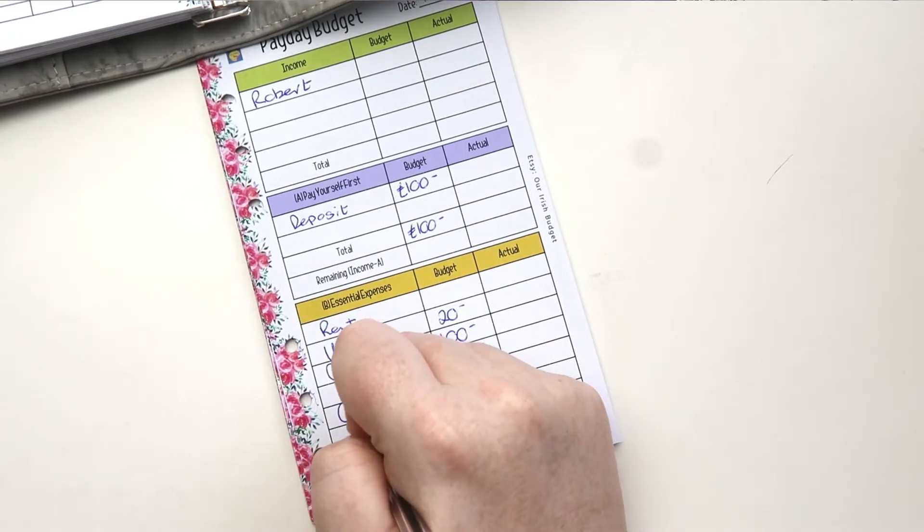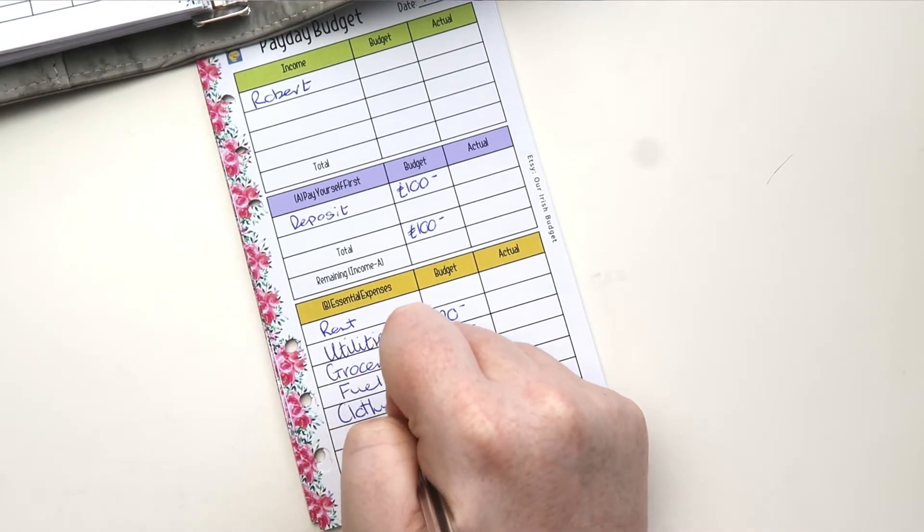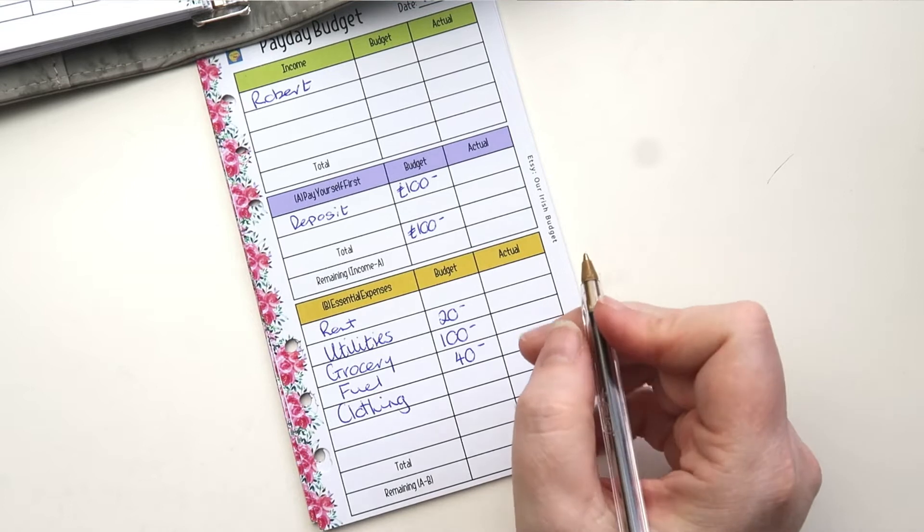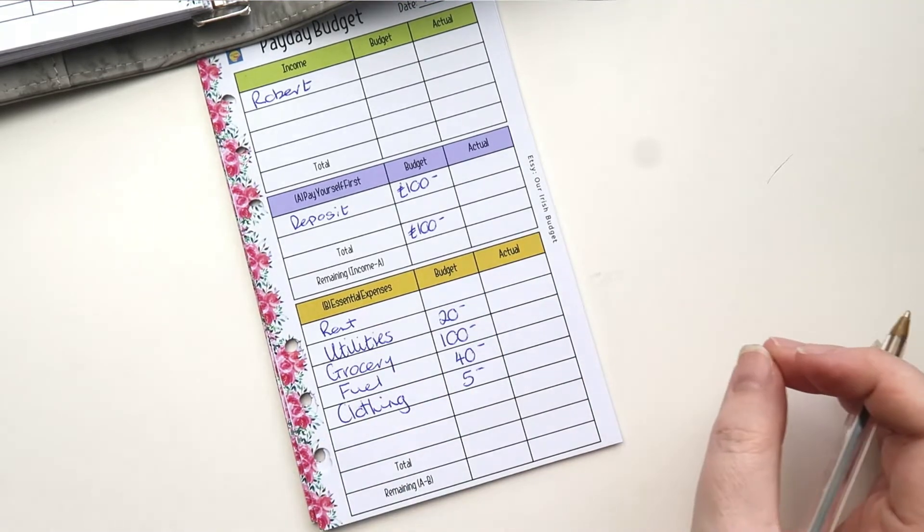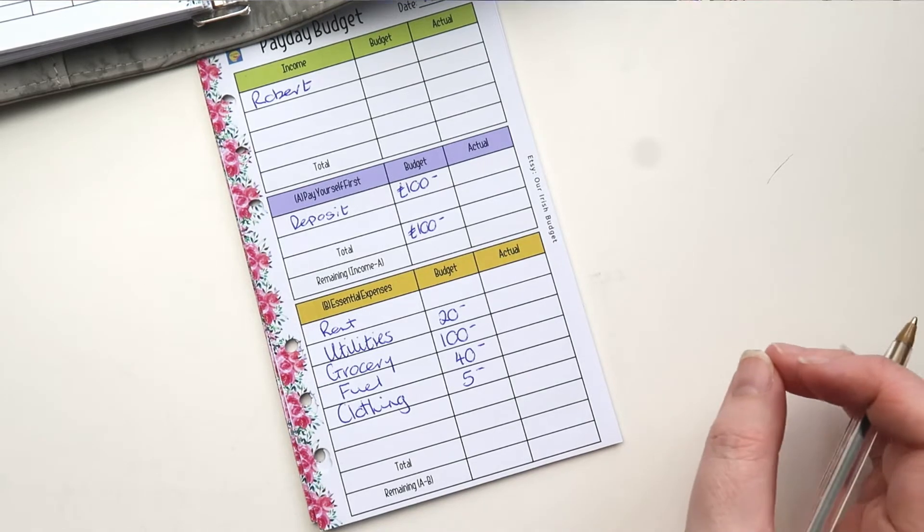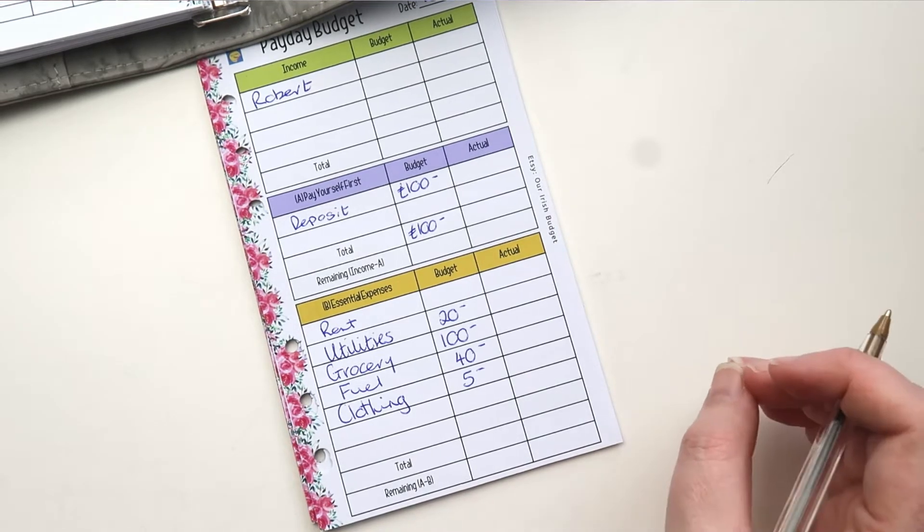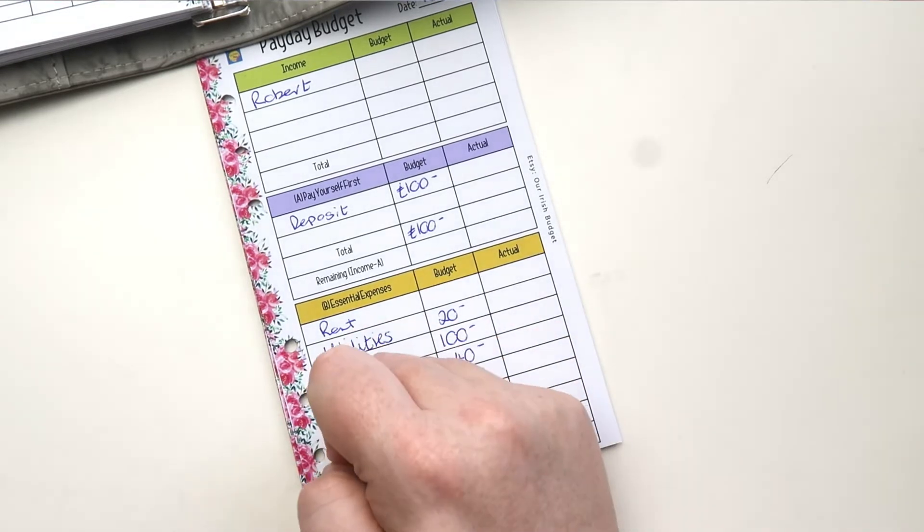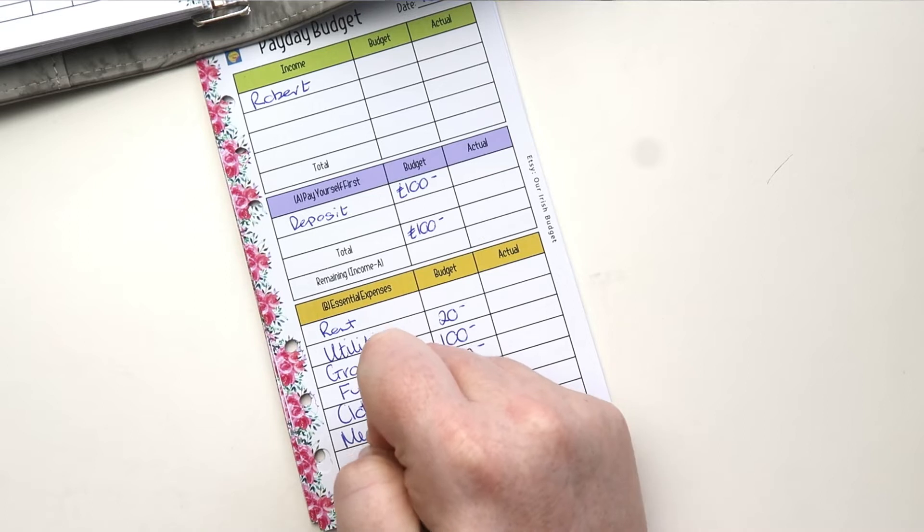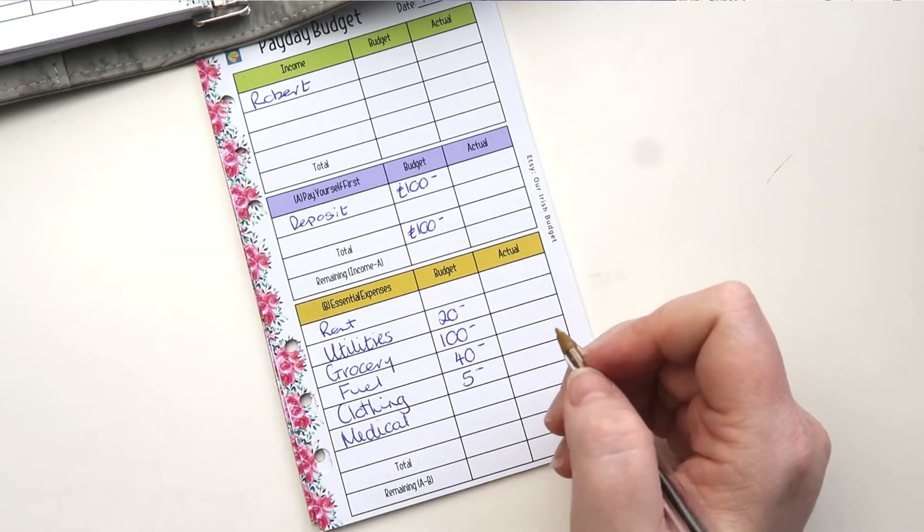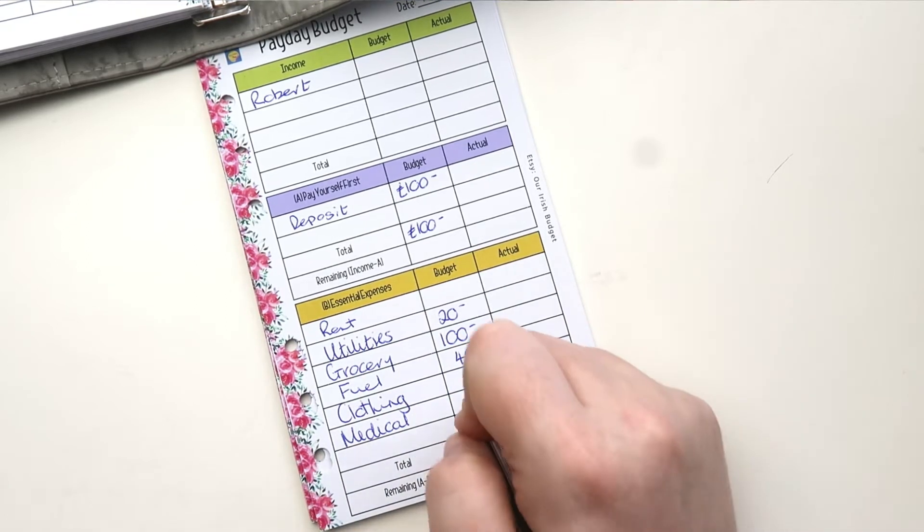Then we have clothing. So you might not need new clothes now, but in the chance that you will at some stage, you just put a little bit of money aside so that when that time comes, you don't have to worry about where the money is going to come from. And then medical, everybody needs some sort of money towards medical. And we are going to put 21.52.